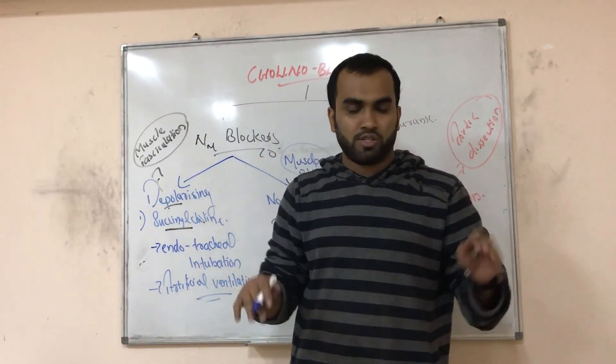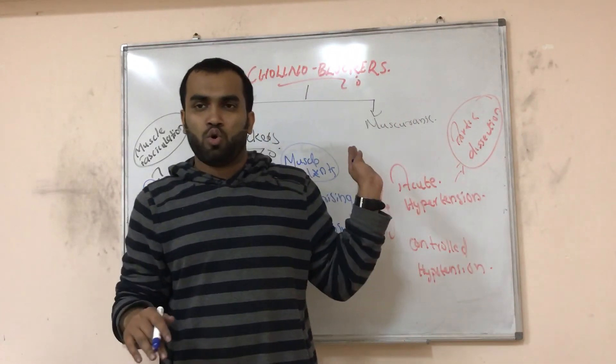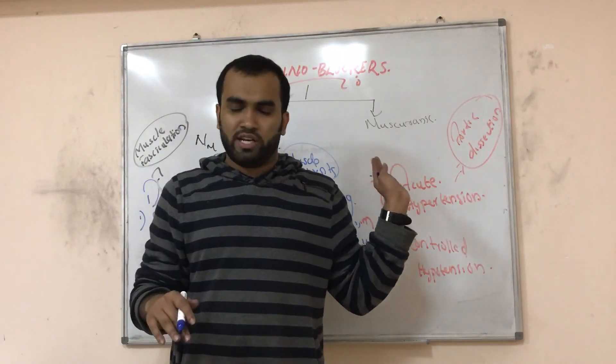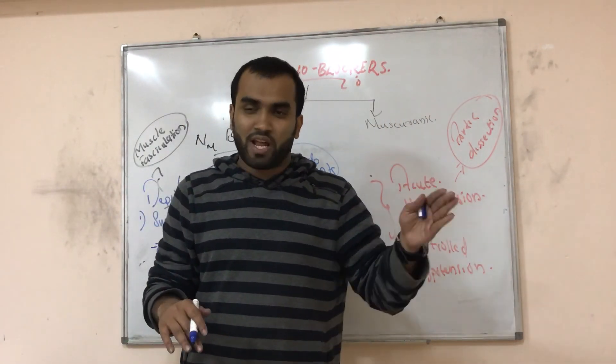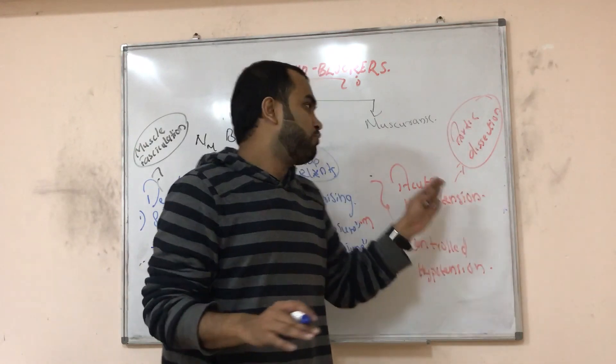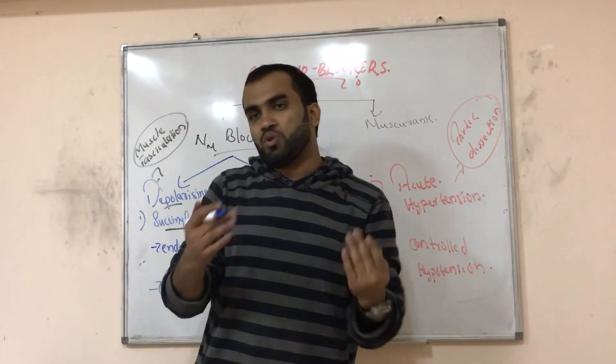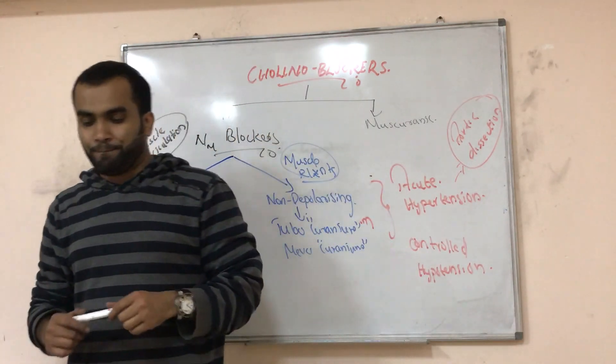So these are the important nicotinic blockers — both neuromuscular (NM) and nicotinic neural (NN). Now we will go to the biggest one, that is muscarinic blockers.